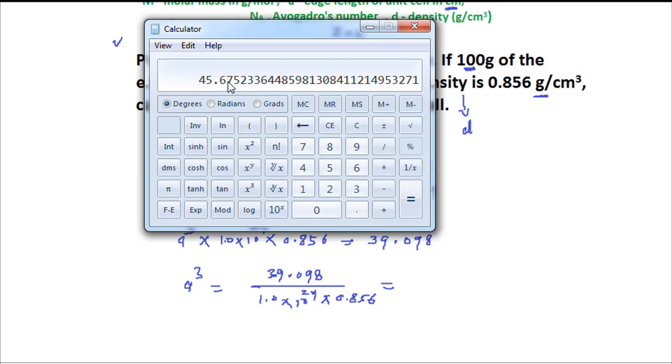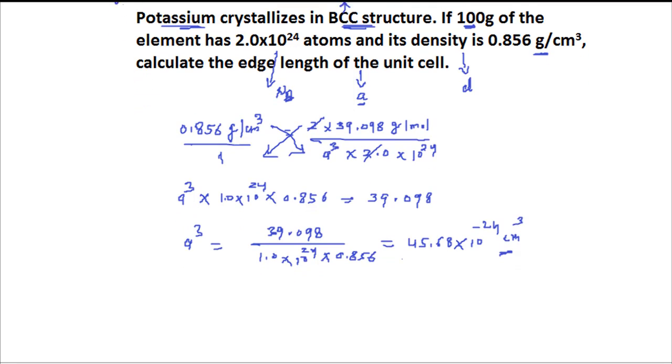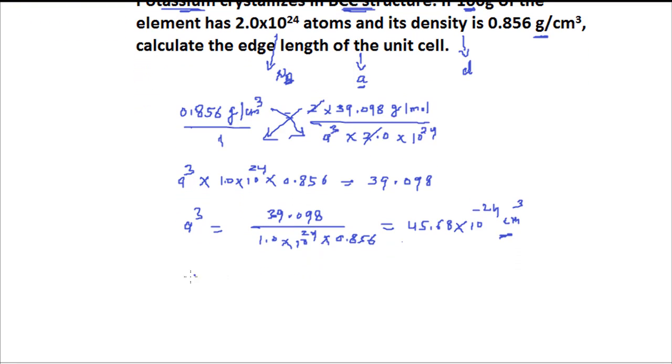And we can round off and at least we can write this value in four significant figures 45.68. Here we have 45.68. And this is the exponent. It is raised to exponent. When it goes up, it becomes negative 10 to power minus 24. And it is in centimeter cube. Volume of a unit cell is in centimeter cube. Now this is the A cube value.